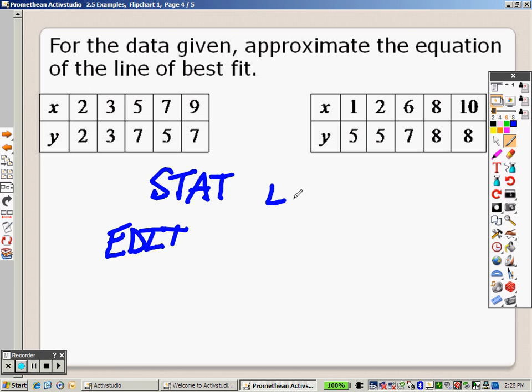See how on your list it says L1, and it has L2, and sometimes it goes to L3 and farther. We're going to plug in the numbers in L1, and L1 is going to be our x's. So in that column, plug in all your x's down the line: 2, 3, 5, 7, and 9.